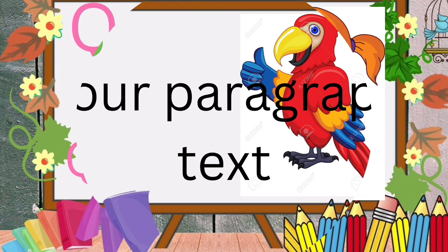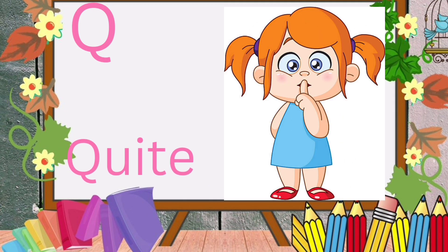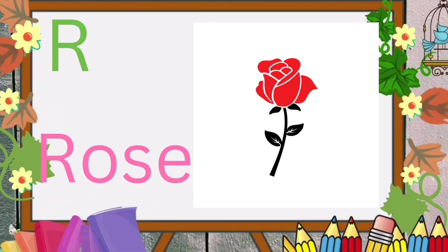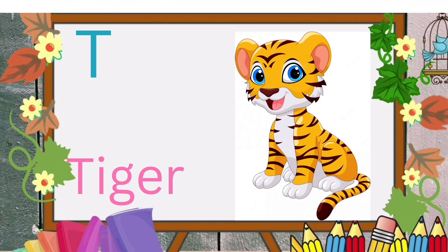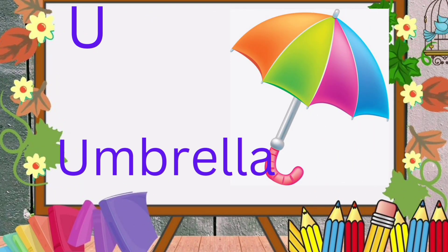Q for quiet. R for rose. S for sun. T for tiger. U for umbrella.